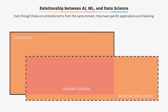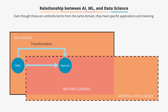Let's look at the flow diagram to understand the relationship between AI, machine learning, and data science. ML is also an element of artificial intelligence. The first step is data gathering and data transformation, which falls under data science — it is the process of converting data from one format or structure into another. After gathering data, we use machine learning techniques such as supervised learning or unsupervised learning to make predictions and derive insights.